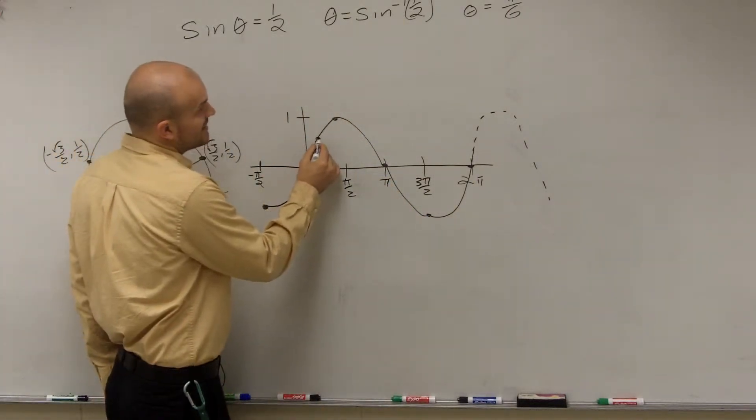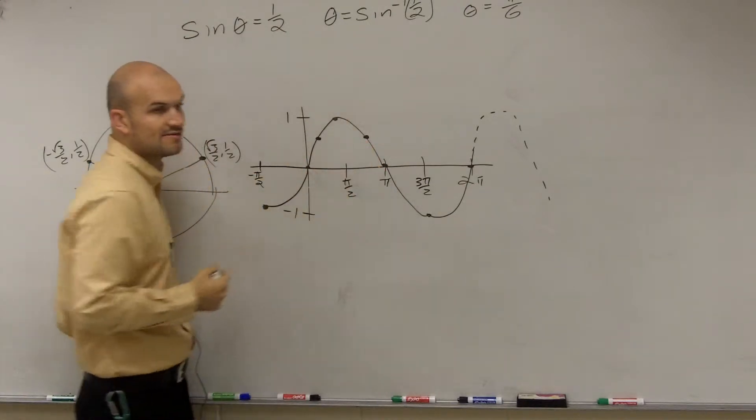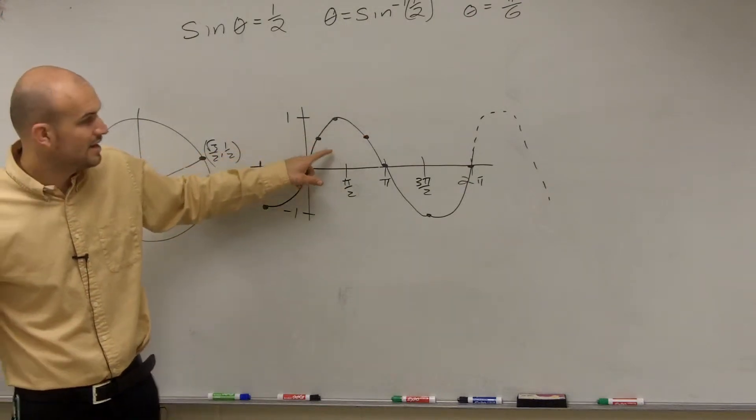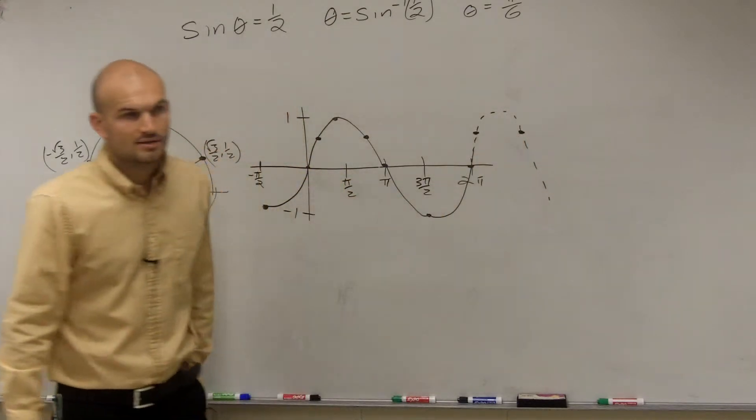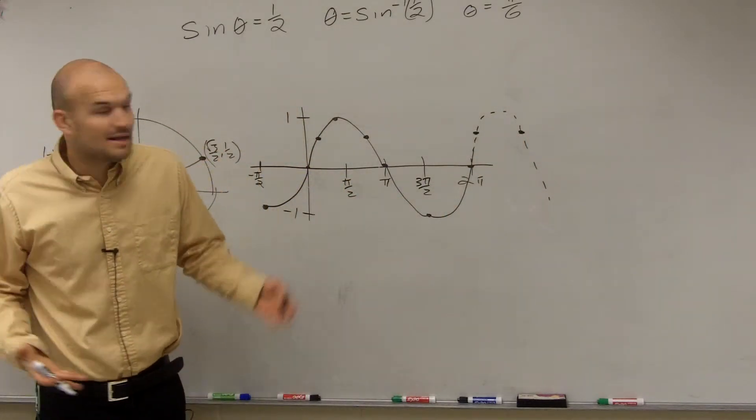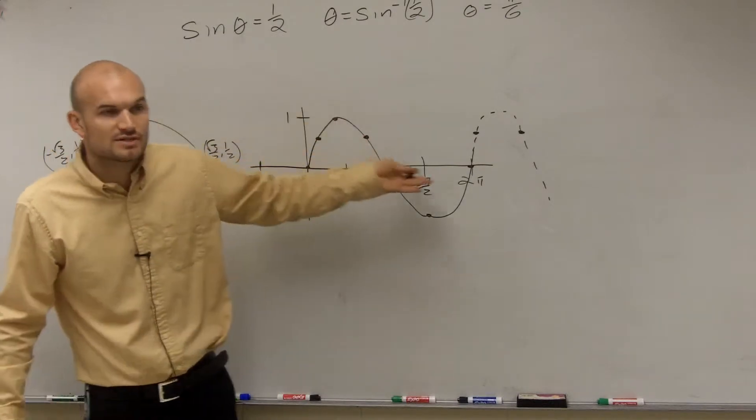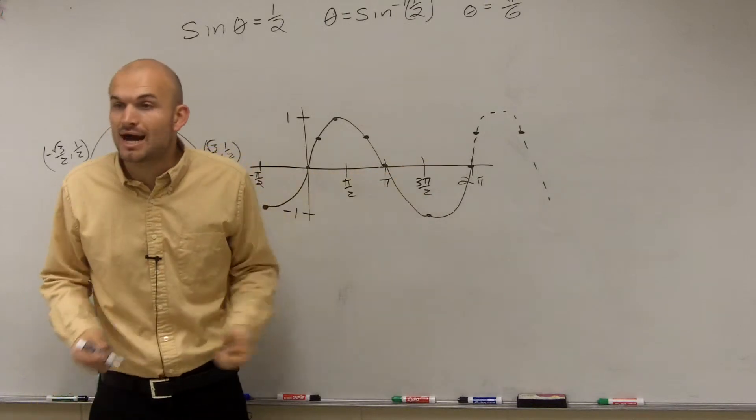When does sin(θ) = 1/2? Sin(θ) equals 1/2 at π/6 and also at 5π/6 - you see how it hits those two points. Then it's going to continue again. There are infinitely many answers for what our inverse is going to be. This graph keeps going on forever.